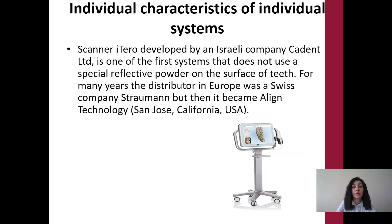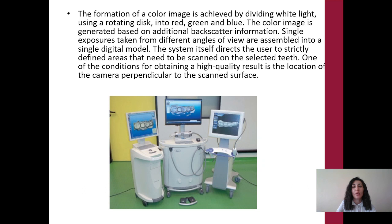The individual characteristics of individual systems. Scania Arteria, developed by the Israeli company Cadent Ltd., is one of the first systems that does not use a special reflective powder on the surface of teeth. For many years the distributor in Europe was the Swiss company Straumann, but then it became Align Technology. The formation of a color image is achieved by dividing white light using a rotating disc into red, green, and blue. The color image is generated based on additional backscatter information. Single exposures taken from different angles of view are assembled into a single digital model. The system directs the user to scan layer-defined areas on selected teeth, and one condition for a high-quality result is the location of the camera perpendicular to the scanned surface.